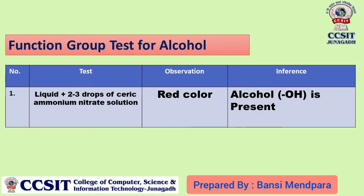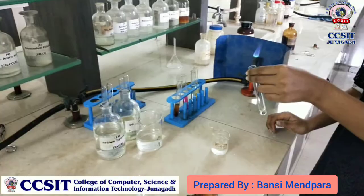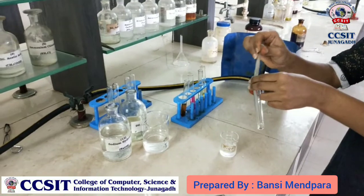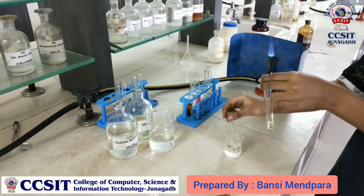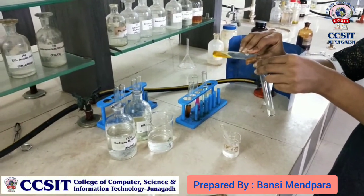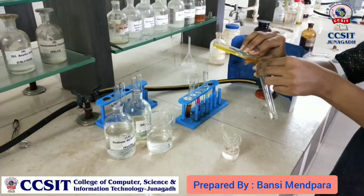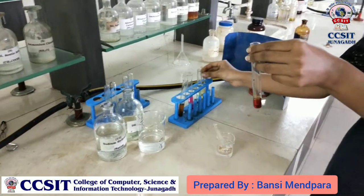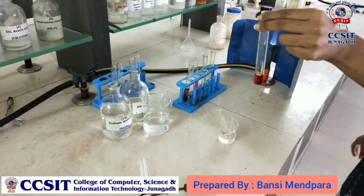Functional group test for alcohol: we will try to do two to three drops of ferric nitrate. The red color will be present. We will add the liquid substance. It will form the red content. It will confirm alcohol present. The red color result confirms this is an alcohol group which is present.